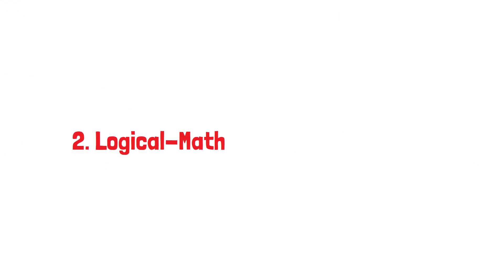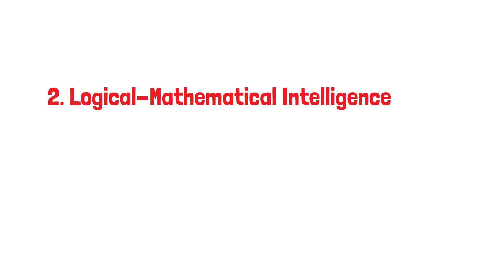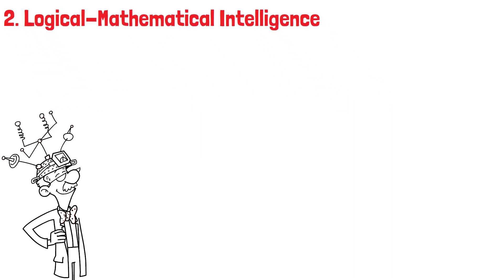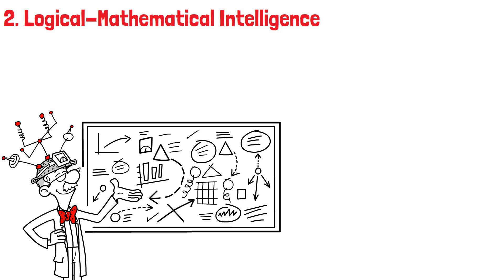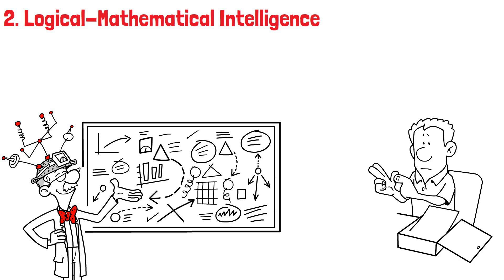Number 2. Logical Mathematical Intelligence. For those with strong logical mathematical intelligence, the world is a vast puzzle waiting to be solved. Numbers, patterns, and equations are intimately woven into the fabric of the universe, there for the discovery. While some recoil from math and logic,